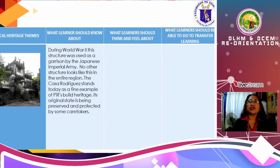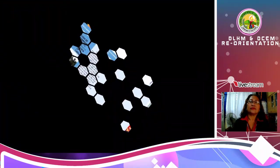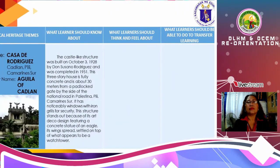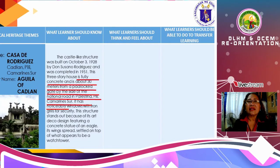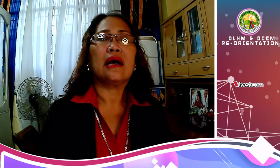During World War II, this structure was used as a garrison by the Japanese Imperial Army. No other structure looks like this in the entire region. The Casa Rodriguez stands today as a fine example of Pili's built heritage. Its original state is being preserved and protected by some caretakers. The castle-like structure is fully concrete and is about 30 meters from a padlocked gate by the side of the National Road in Palestina, Pili, Camarines Sur.